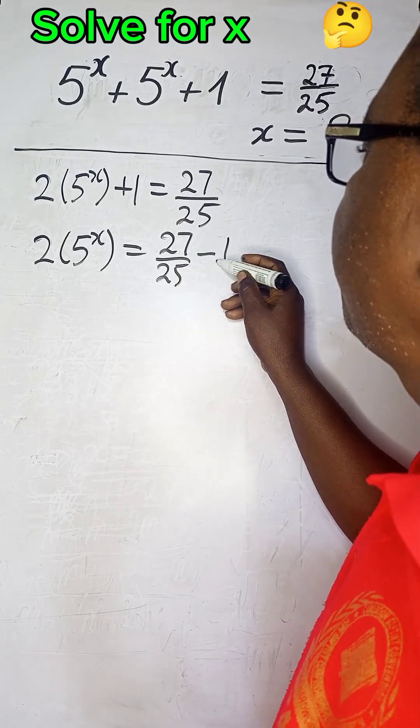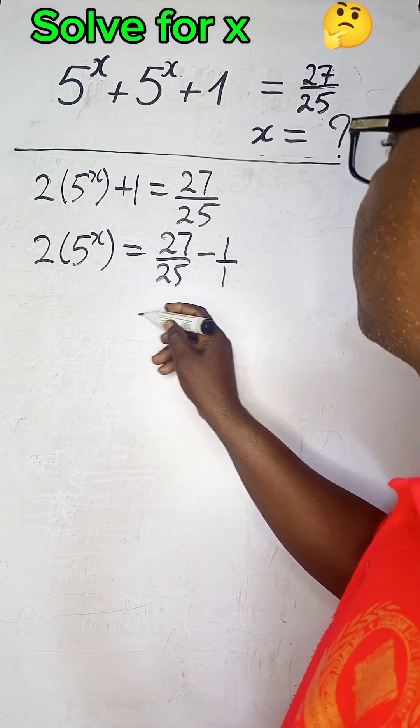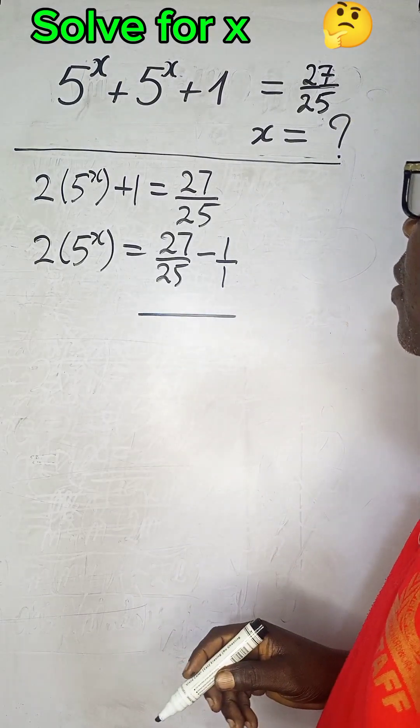This is a fraction. We can always make this a fraction. 1 is the same as 1/1. So, that will carry out that subtraction with a lot of ease.